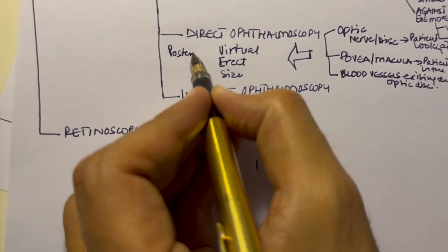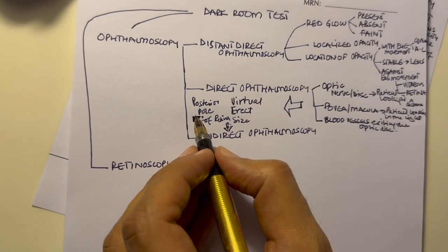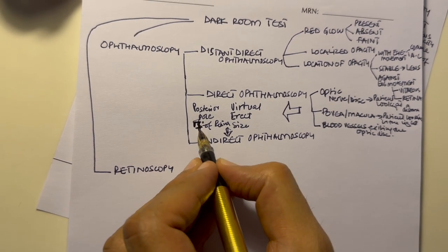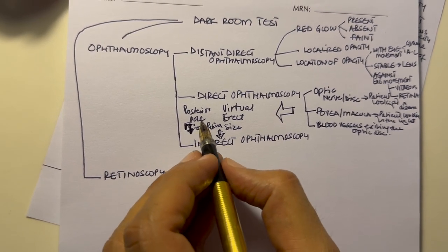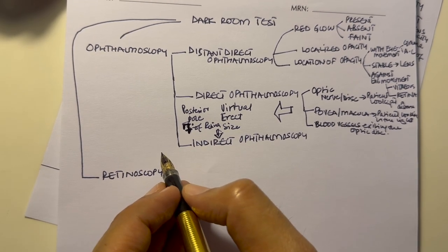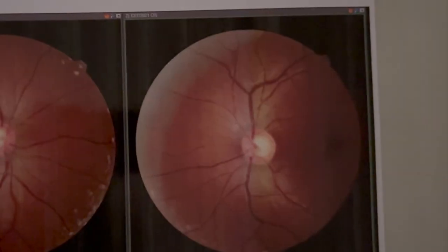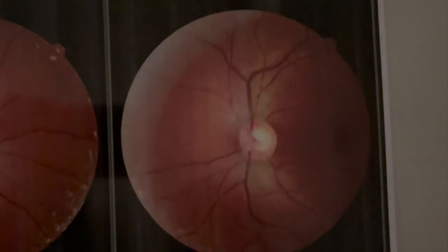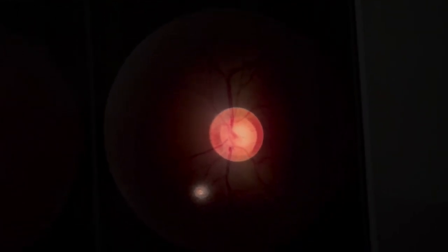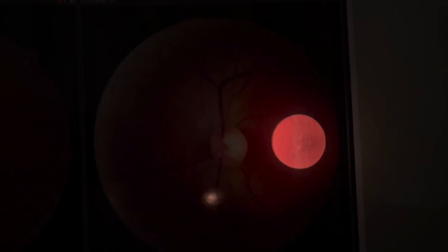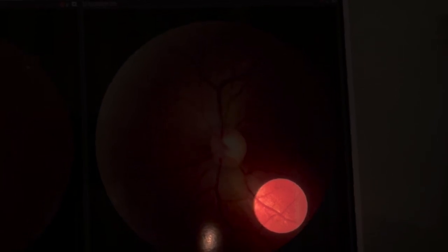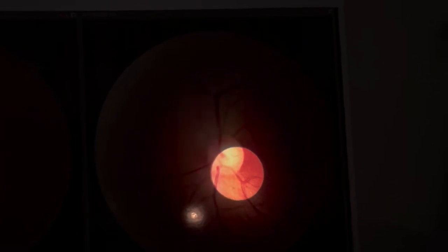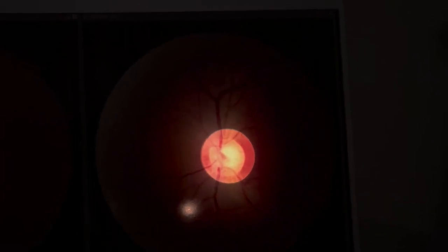The limitation of the direct ophthalmoscope is that it only gives a view of the posterior pole, which is about seven degrees of retina. If you want to see beyond seven degrees, all the way to the ora serrata, you need to do an indirect ophthalmoscopy. Sometimes you can only see one vessel, and the way to find the disc is to follow that vessel all the way back until you can see the disc.